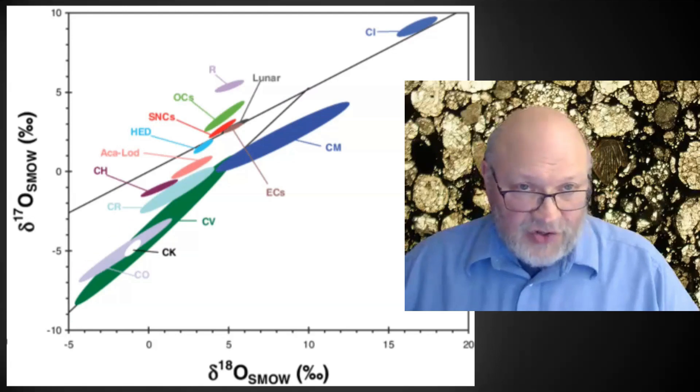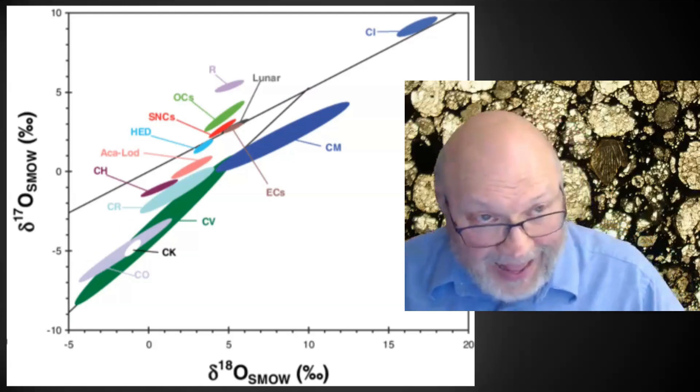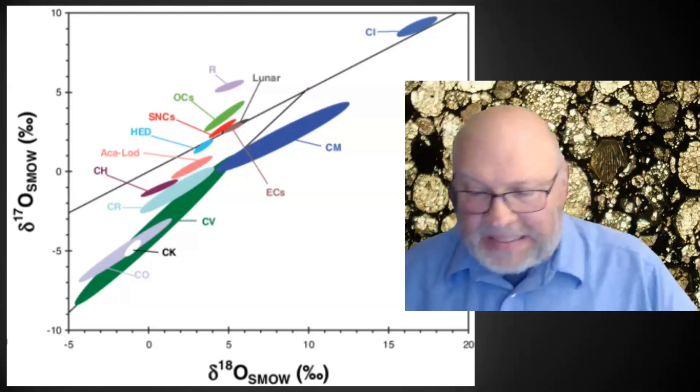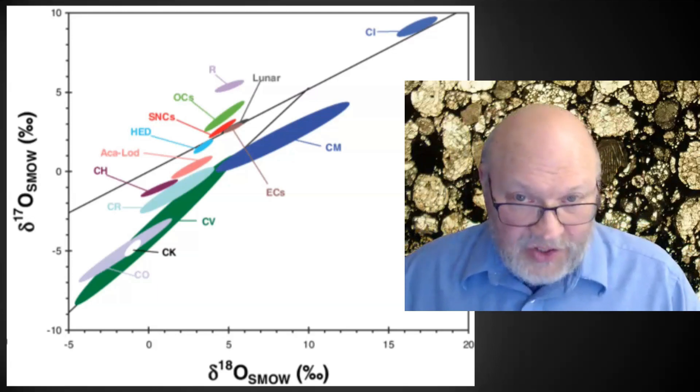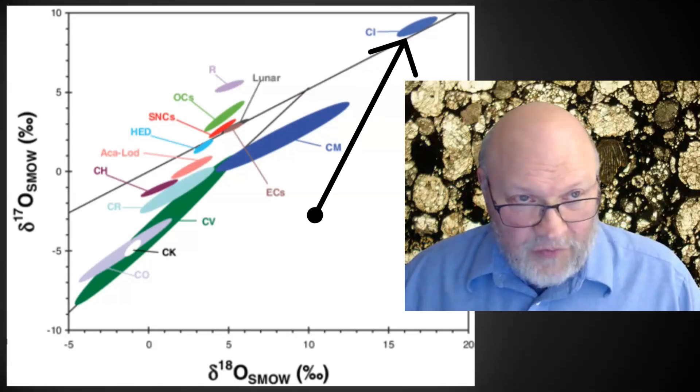That's the CAI line, essentially the carbonaceous chondrite anhydrous minerals, or CCAM line. There the CAIs fall along it, and a lot of the bulk carbonaceous chondrites fall along it too, except for CIs, which we see are above the terrestrial line and over at the upper right.